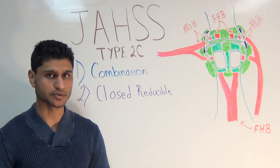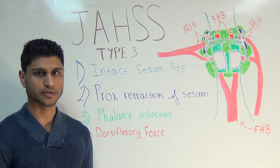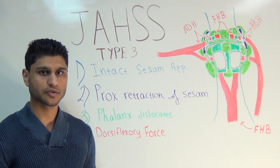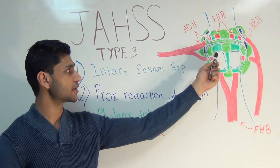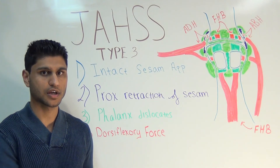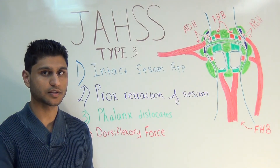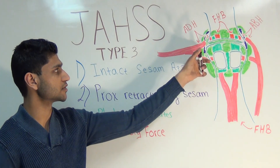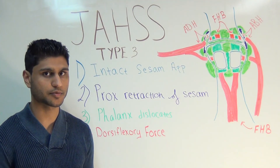Generally speaking, type 2 injuries are closed reducible. In a type 3, the sesamoid apparatus remains intact, and there is proximal retraction of the sesamoids, and only the proximal phalanx dislocates dorsally. The theory is that whatever dorsal flexor force was causing injury to the proximal attachment of the plantar plate is now occurring more distally, thereby causing rupture of the attachments at the base of the proximal phalanx. The sesamoids do not dislocate dorsally and distally as seen in types 1 and 2 — the sesamoid apparatus remains relatively intact. It's just the attachments, such as the tendons or the phalangeal sesamoidal ligaments, that may be injured, thereby causing injury to only the proximal phalanx.